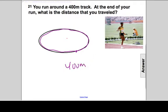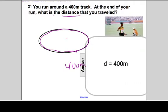So the number of meters that you run would be the distance traveled. Distance is how many steps you take or how many meters you run, 400 meters.